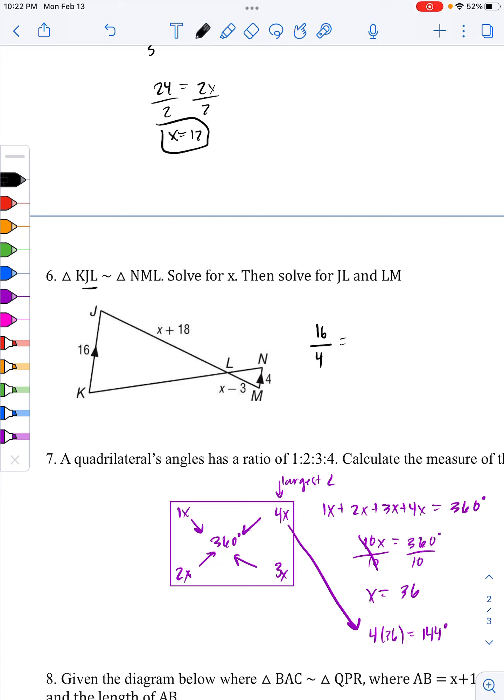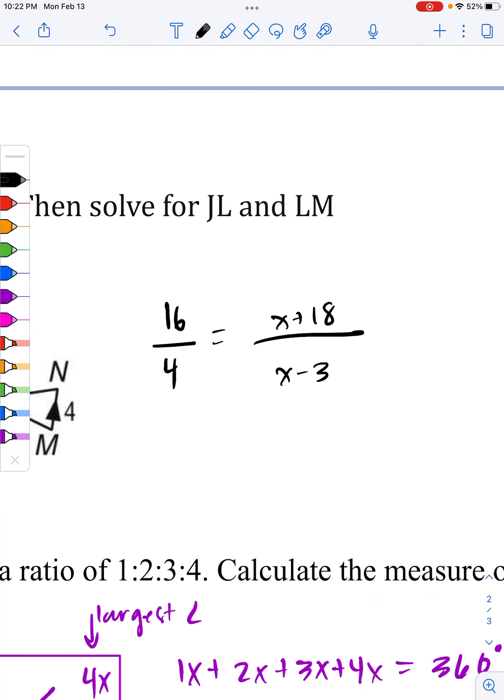We also have JL, which is proportional to ML. And we could write that from left to right as well. X plus 18 over X minus 3. Now, to make this a lot easier on ourselves, let's actually simplify this.